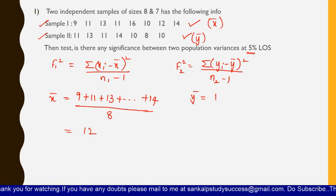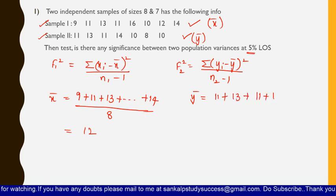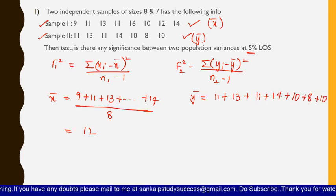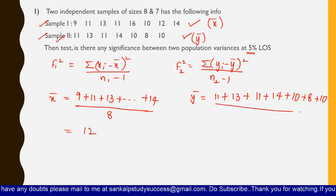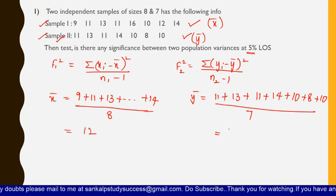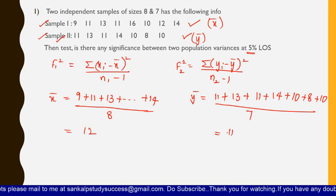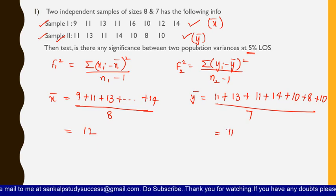For ȳ, the mean of sample 2: we add 11 + 13 + 11 + 14 + 10 + 8 + 10 (seven observations) and divide by 7, giving ȳ = 11.